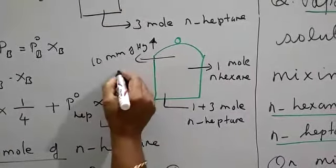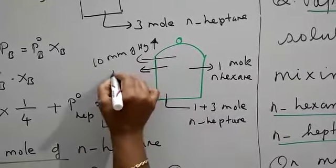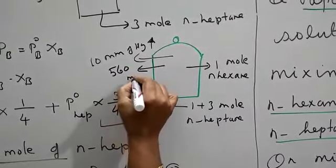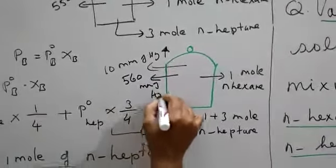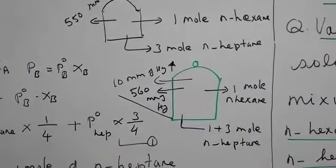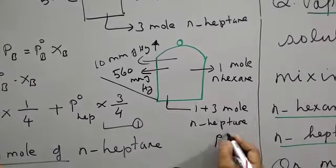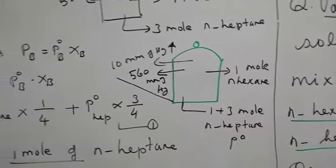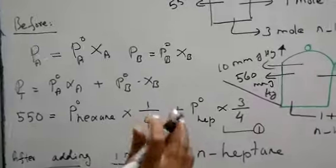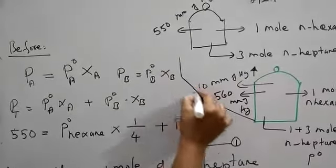If it is 10 mm increase, what should be its pressure? 560 mm of mercury is the now fresh pressure. With that we have to find out P naught of the heptane. This is the given data. Now let us see the approach.